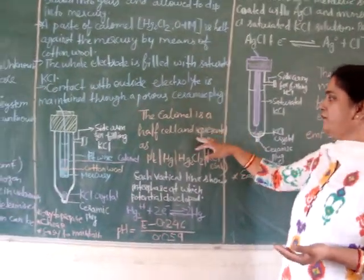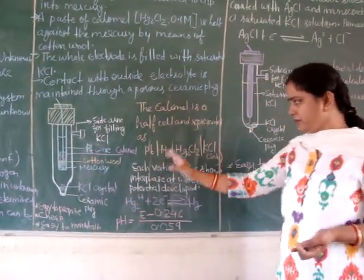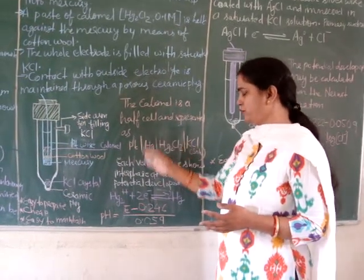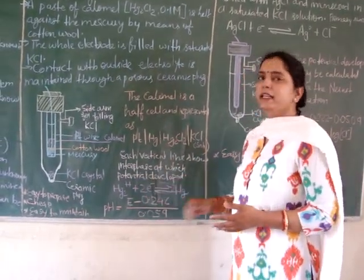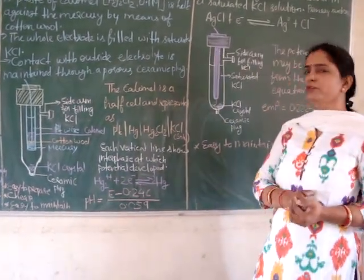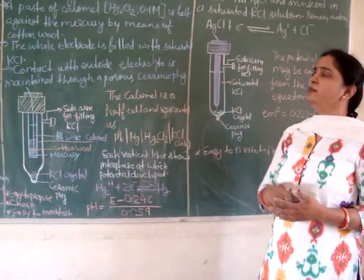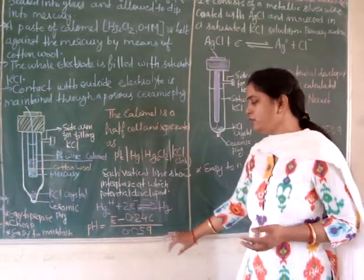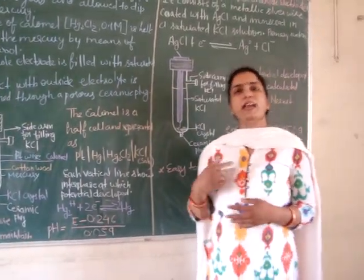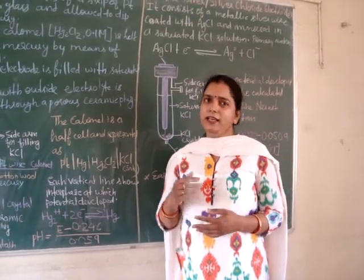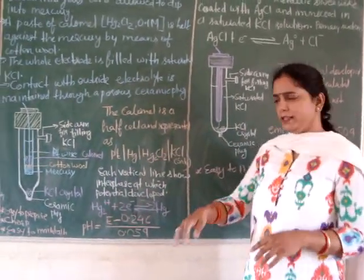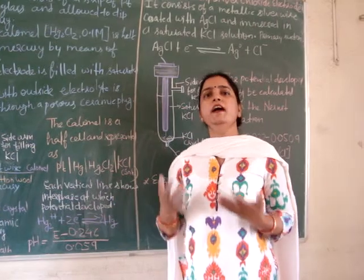The calomel electrode is a half cell and it is represented as: platinum | mercury | mercury chloride | potassium chloride solution (saturated). Each vertical line shows an interface, and at this interface the potential is generated. The primary reaction responsible for the potential difference is mercury ions accepting electrons and being converted into mercury. We can calculate the pH with the help of the calomel reference electrode using this formula: pH = (E − 0.246) / 0.059, where 0.246 is the potential difference of the calomel electrode calculated with respect to the hydrogen electrode.